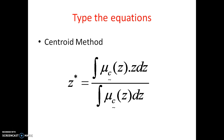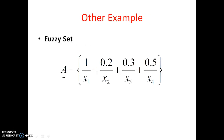Looking at this equation: z-star has a superscript, there is an equal sign, an integration symbol, mu with subscript C, an ampersand beneath, followed by a bracket and z, then dot z dz, divided by an integral of mu_C with the same ampersand and z dz. These types of equations can be easily typed in MathType software.